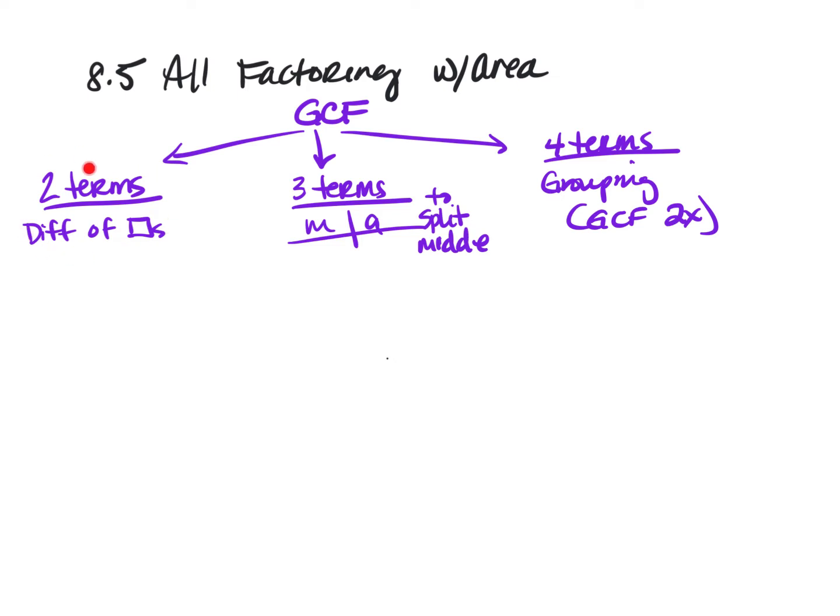The first one I showed you was differences of squares, when you have two squared terms with a minus sign in between. There's only two terms to it, and it's really simple. Then if it was three terms, we did the multiply-add chart, we found the factors that multiplied to the value and added to the middle value, and we split those to find the middle.